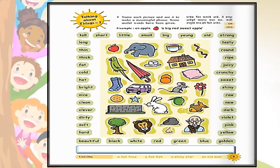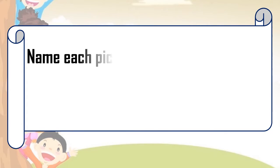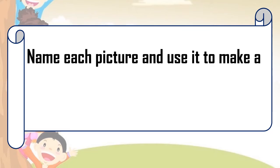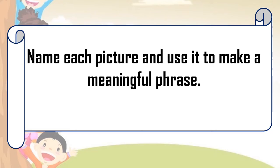This is the page from our textbook. Before doing the activity, let's learn what that activity is and what we are going to do in it. I will read it for you: Name each picture and use it to make a meaningful phrase. There are so many pictures — we have to name each of them and then use those pictures for making meaningful phrases.